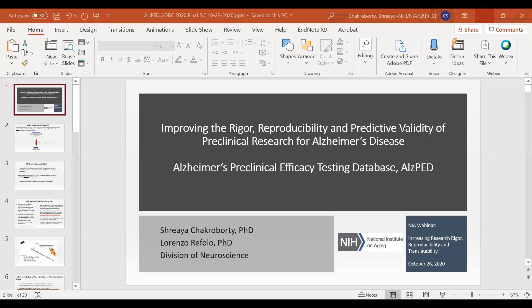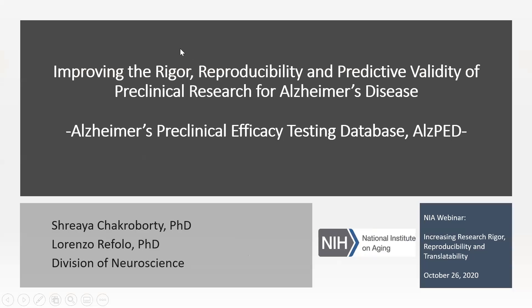Thank you, Susanna. Good afternoon, everybody. Thank you for joining today's webinar. Today I'm going to talk about improving rigor, reproducibility, and predictive validity of preclinical research for Alzheimer's disease through the Alzheimer's disease preclinical efficacy database, or ALSBED. Before we talk about the database, I wanted to explain what we mean by preclinical research.